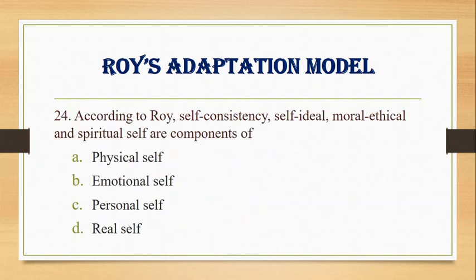Number 24. According to Roy, self-consistency, self-ideal, and moral/ethical/spiritual self are components of: A. Physical self, B. Emotional self, C. Personal self, D. The real self. Answer: C. Personal self.